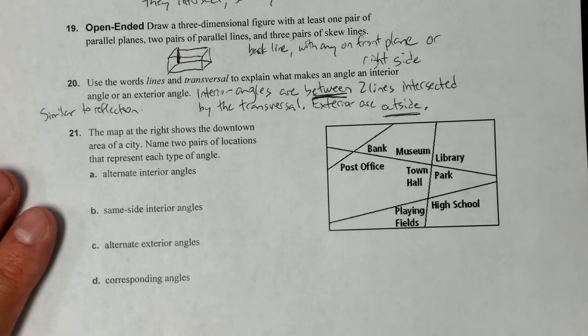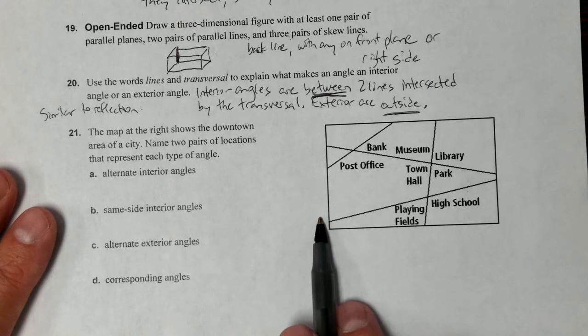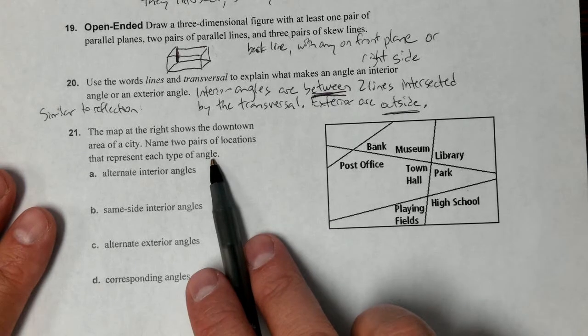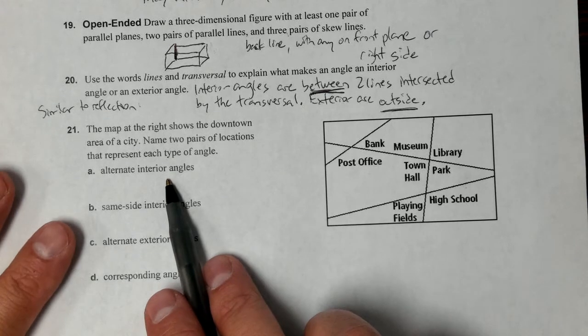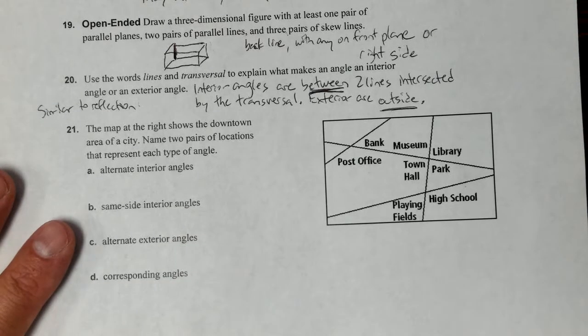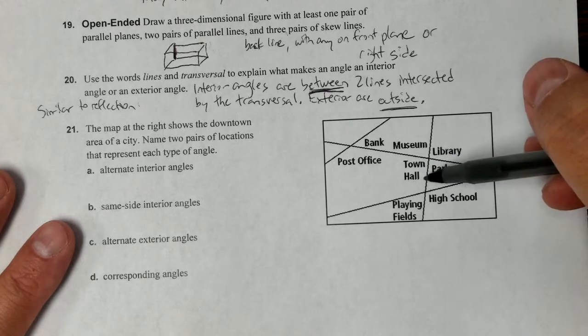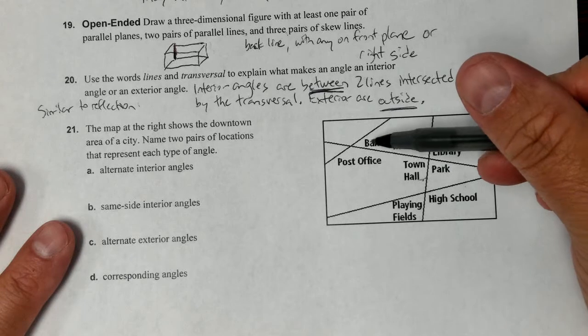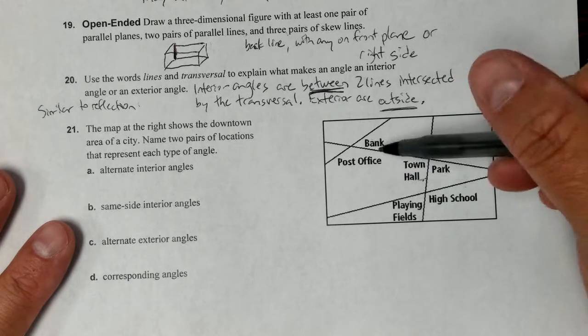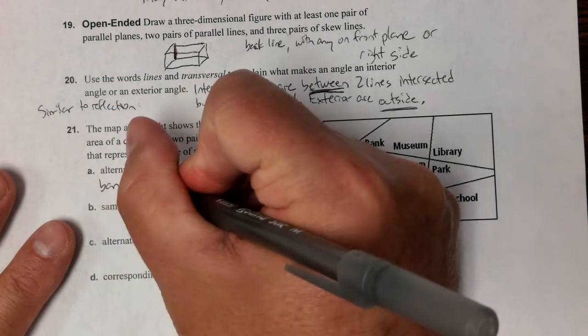Number 21: the map at the right shows the downtown area of the city. Name two pairs of locations that represent each type of angle. Alternate interior - one of them would be the bank and the town hall because they're on opposite sides in between the two lines. So bank and town hall.